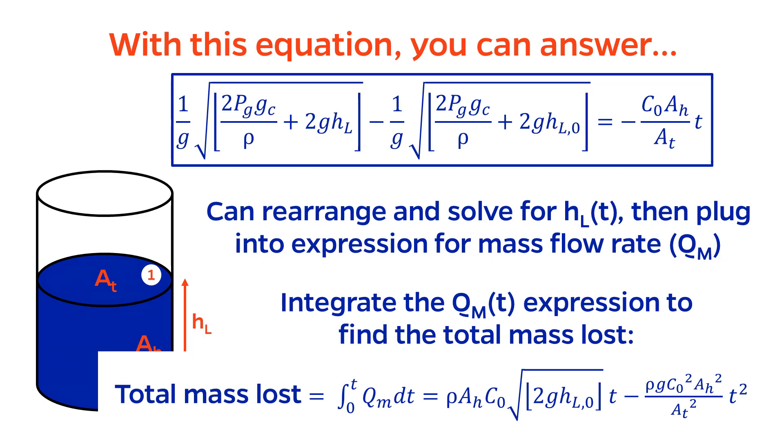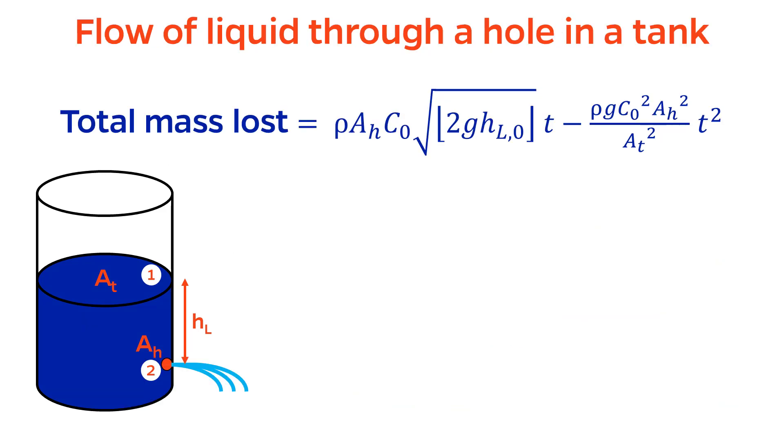Finally, you can integrate that function with respect to time to obtain the total mass lost. Looking at this expression, we can see that the total mass loss is a function of the density, tank size, discharge coefficient, the initial height of fluid above the hole, the area of the hole, and of course the time that the spill was occurring. Isn't it neat how you can answer these process safety questions by applying fundamentals?